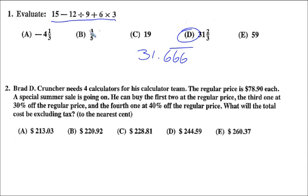Number two. Brad D. Cruncher needs four calculators for his calculator team. The regular price is $78.90 each. A special summer sale is going on. He can buy the first two at regular price, the third one at 30% off, and the fourth one at 40% off. What will his total be?